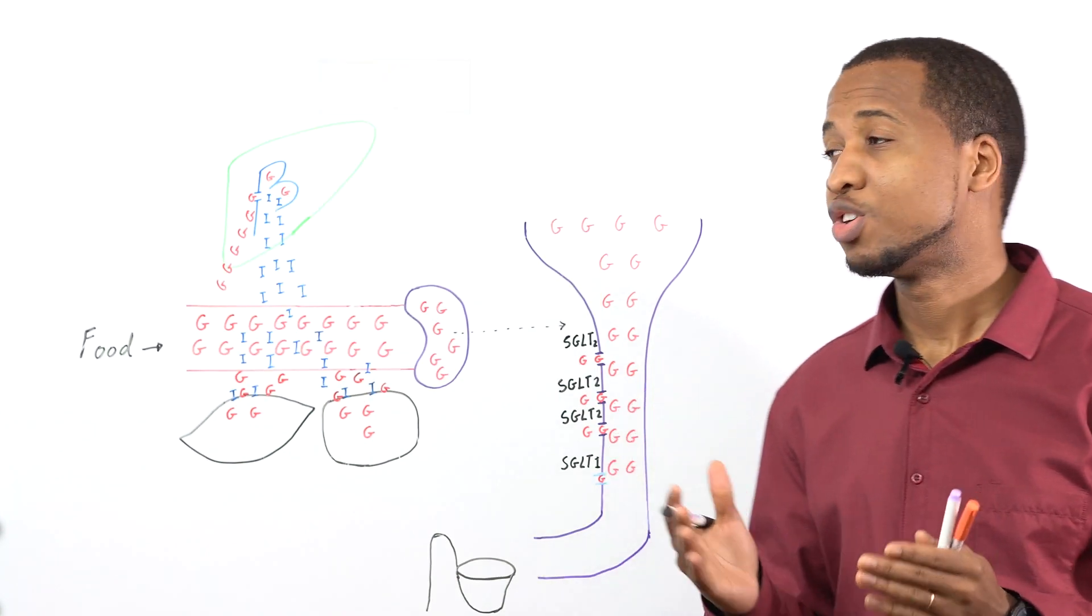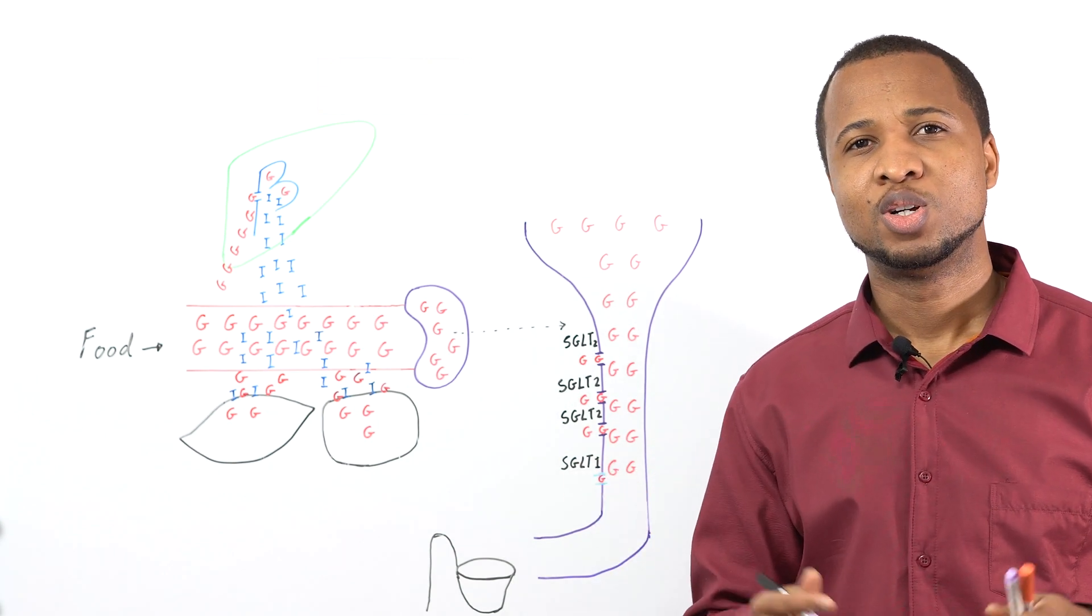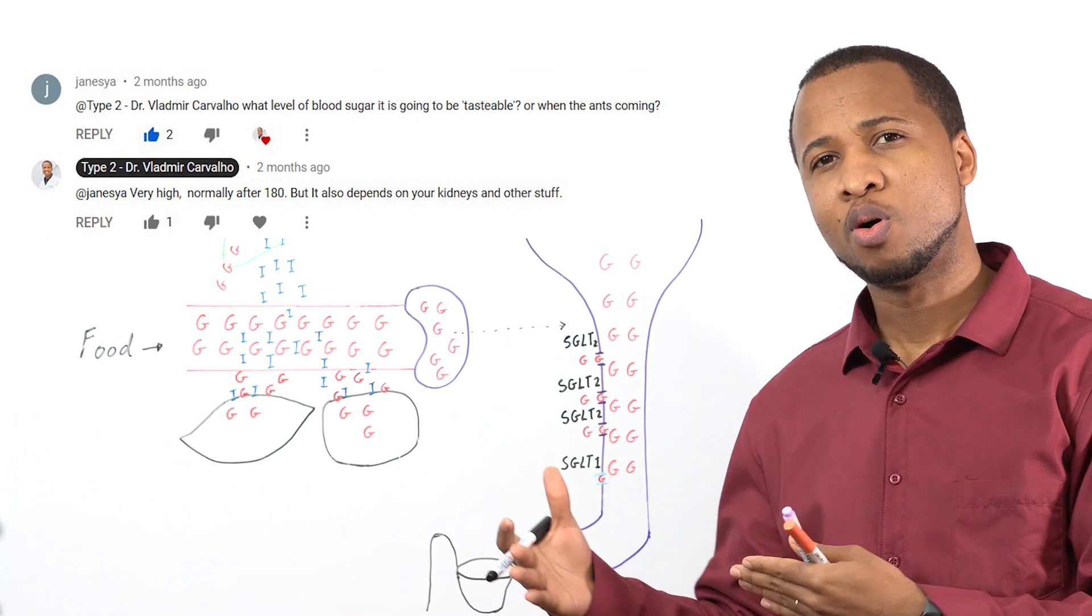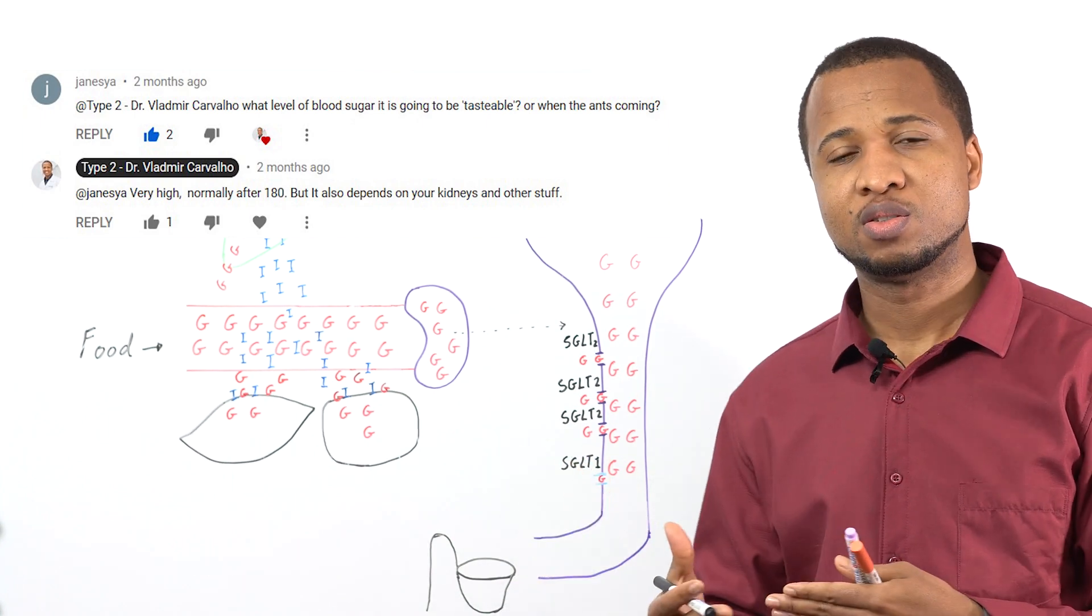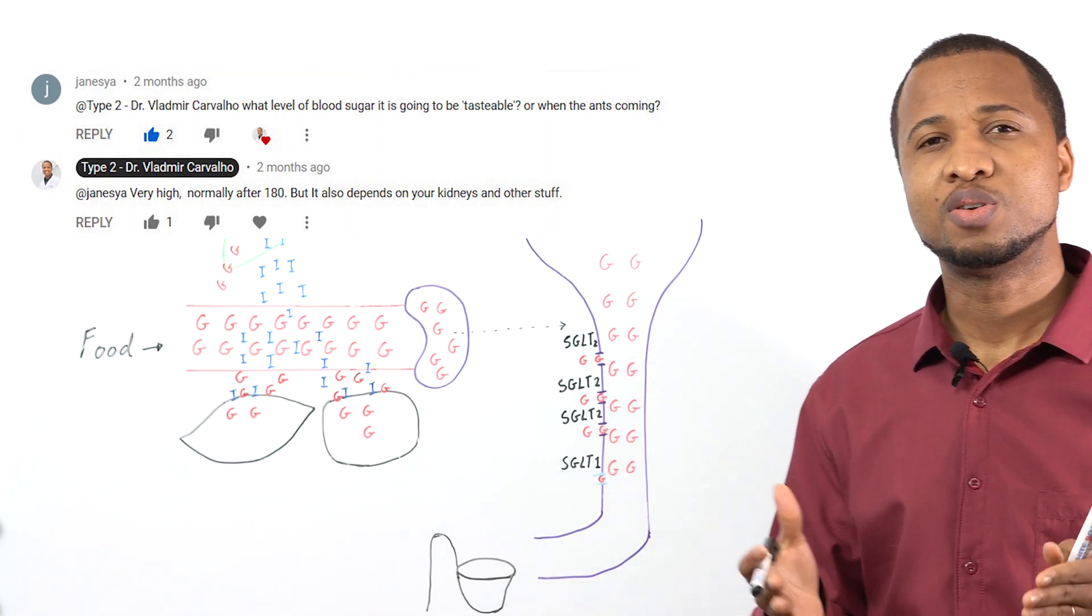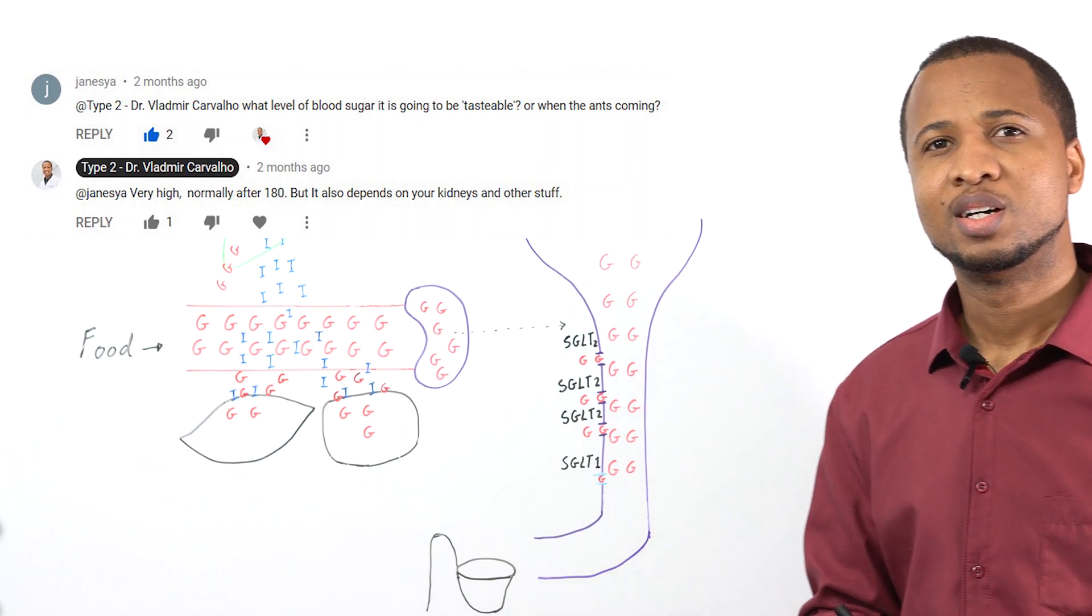Now I told you before that doctors used to taste the urine of patients a long time ago to see if they had diabetes, and some of you wanted to know at what point the glucose will start to appear in the urine. So today I'll just explain everything so you will understand it clearly.